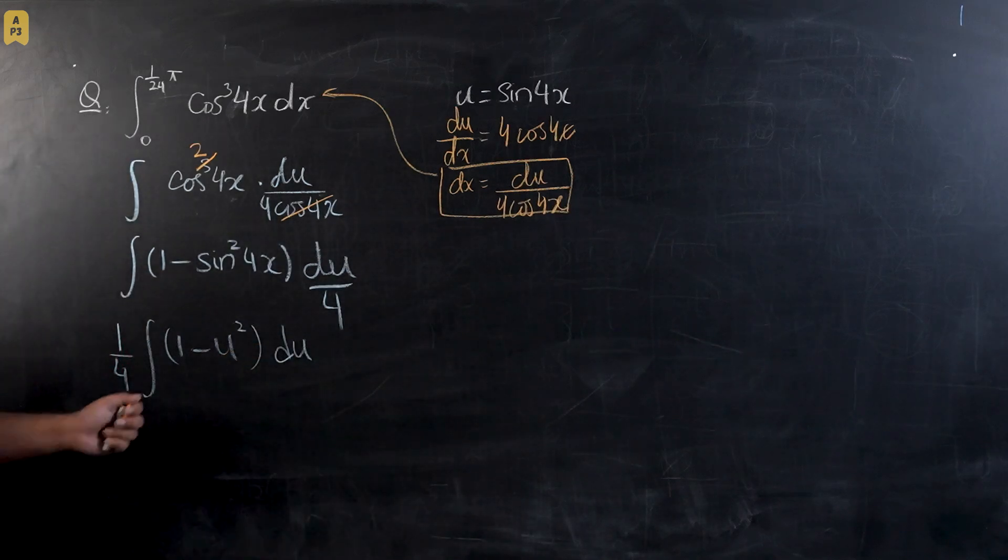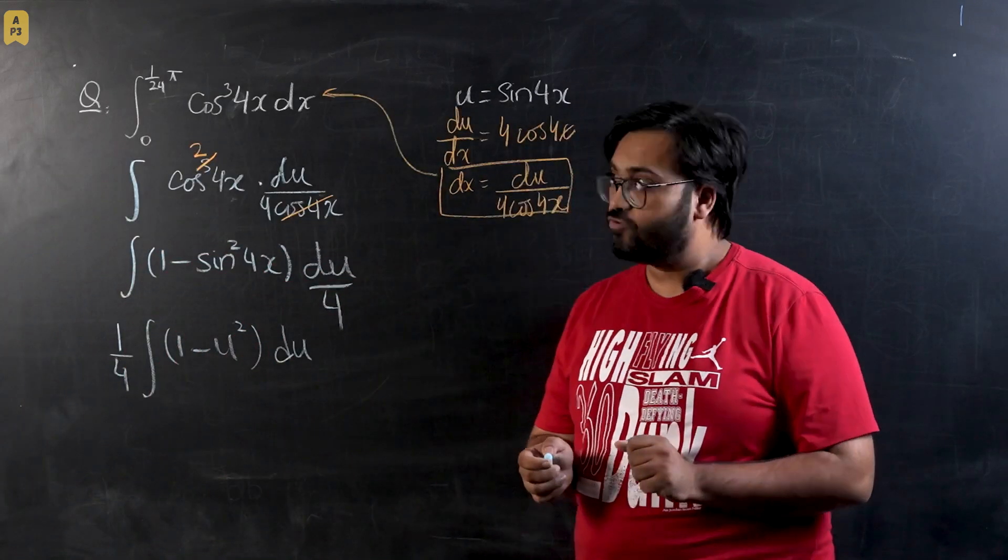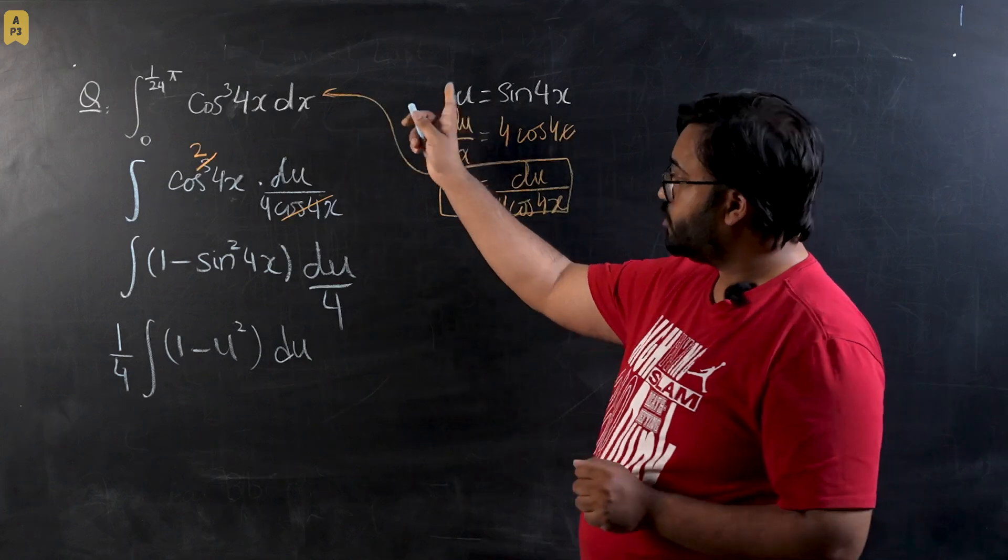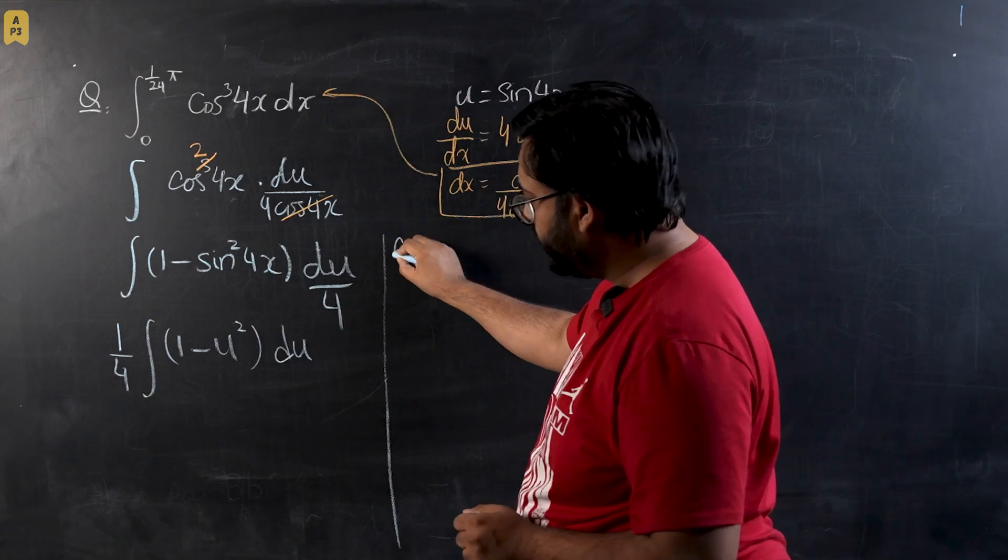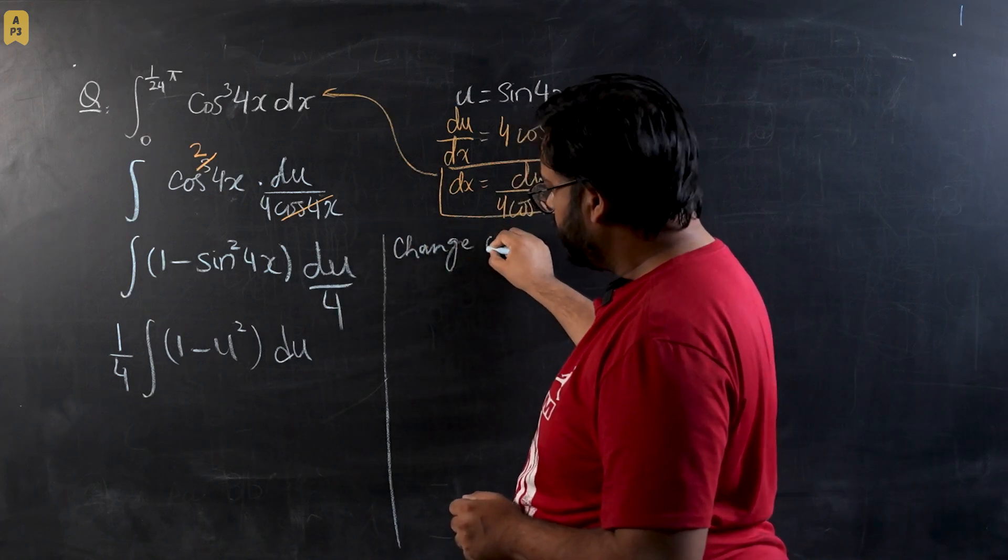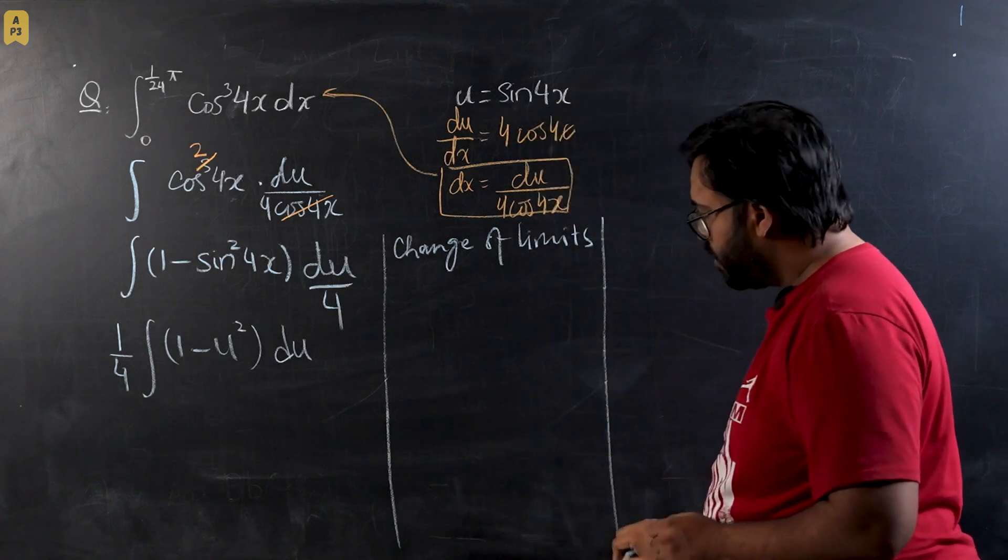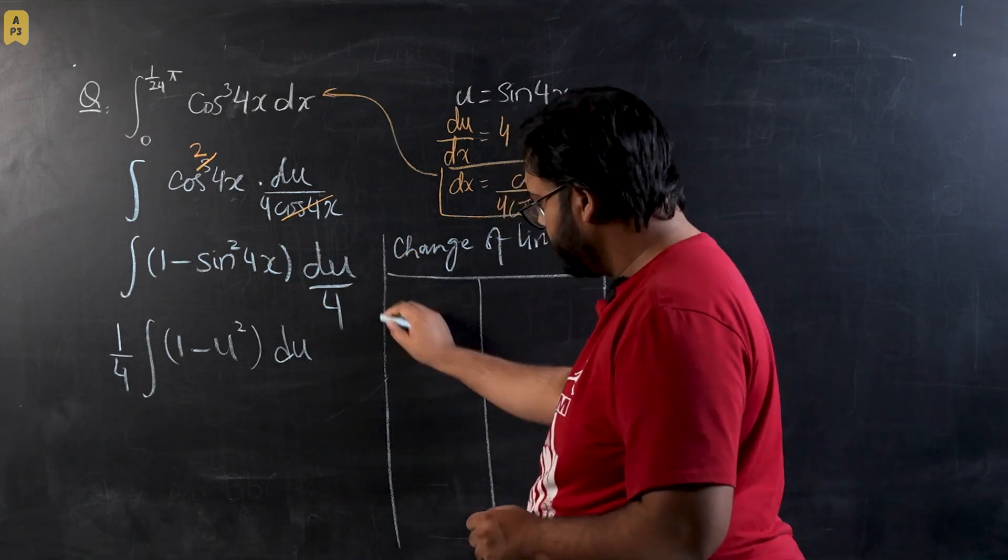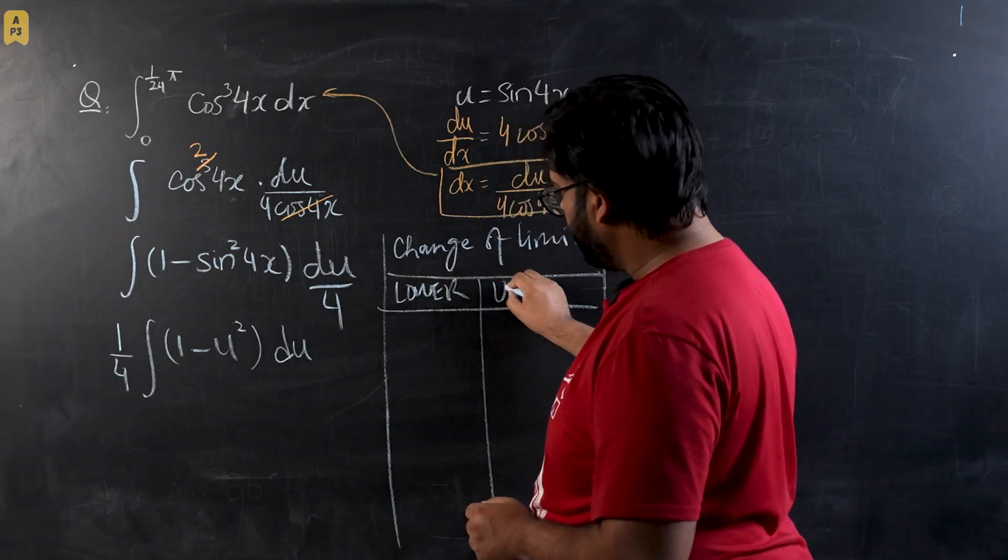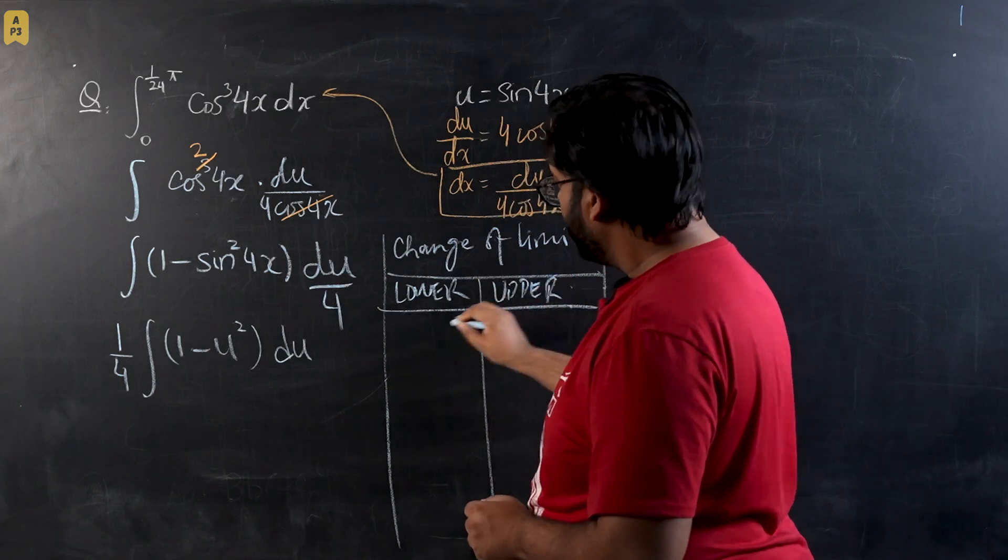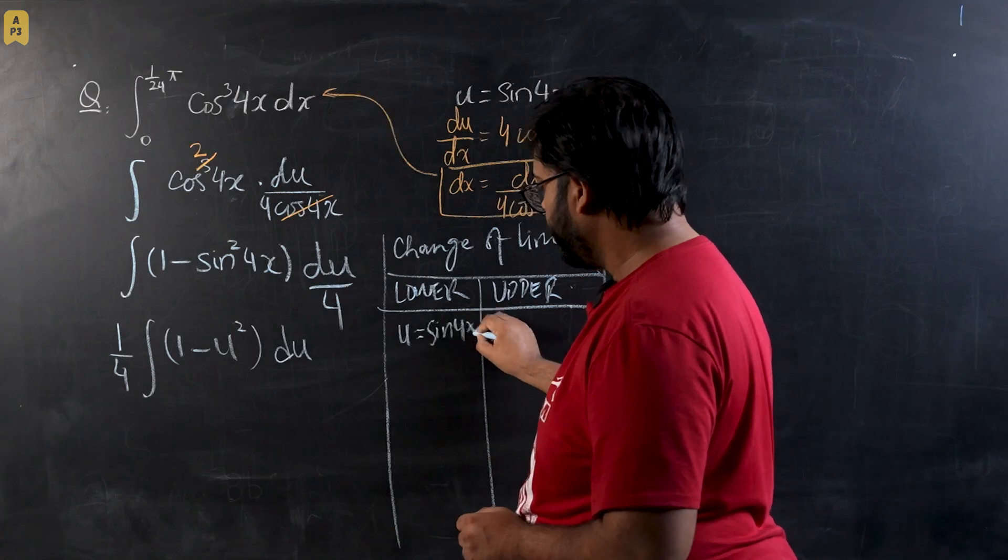Now what we have to do right now, before integrating, I have to convert my limits from x to u. So first of all, I'm going to make a box for change of limits so that we don't have to worry about it later on. First, I'm going to change the lower limit and then we will change the upper limit later on.